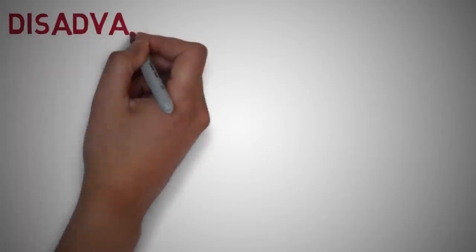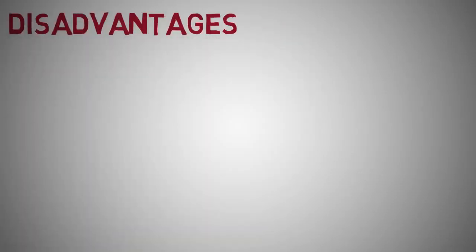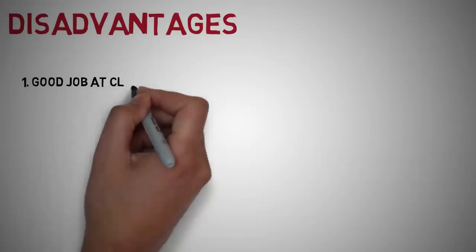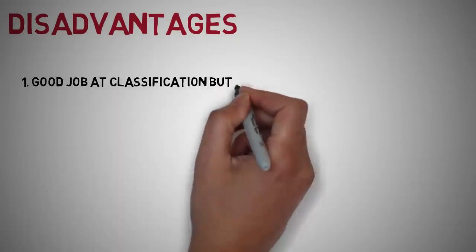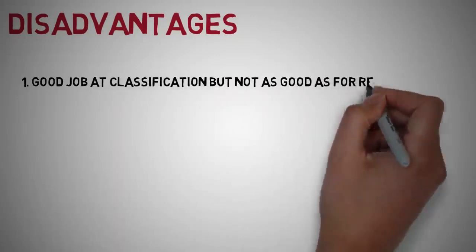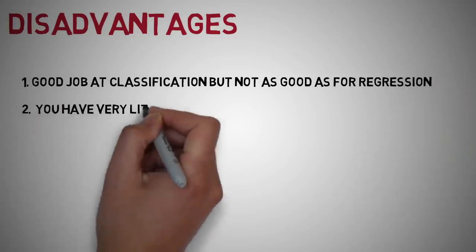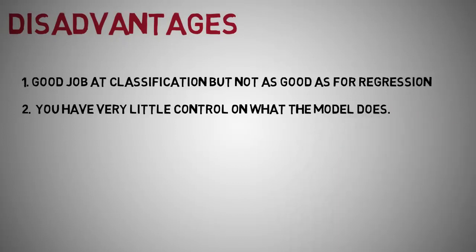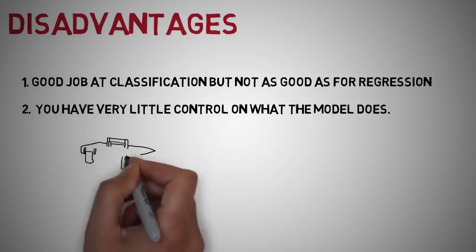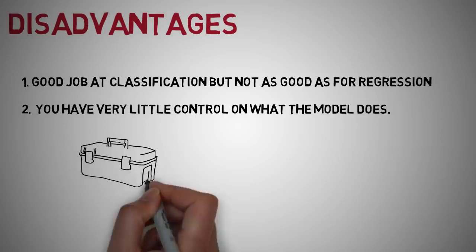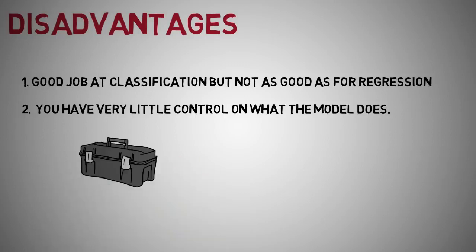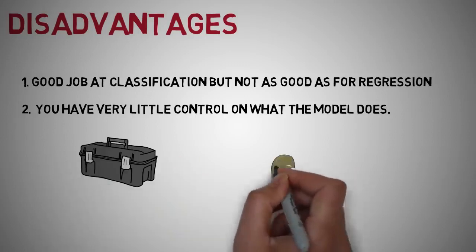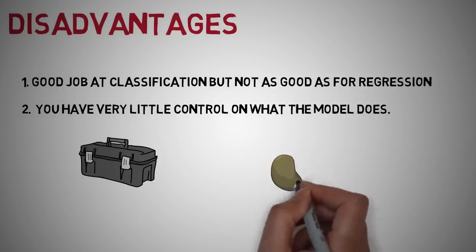If you look at the disadvantages of random forest however, it surely does a good job at classification, but it's not as good for regression problems, as it does not give precise continuous nature predictions. In the case of regression, it doesn't predict beyond the range of the training data. And they may overfit data sets that are particularly noisy. Random forest can feel like a black box approach for statistical modelers. You have very little control of what the model does. You can at best try different parameters and random seeds.